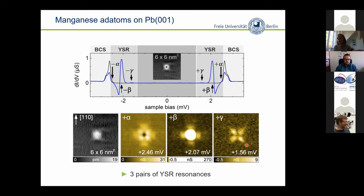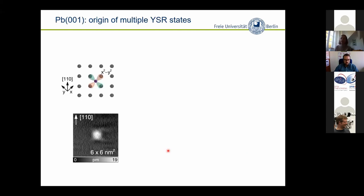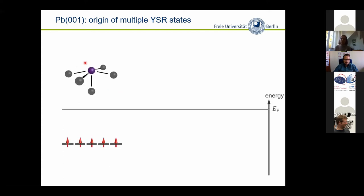When we measure the differential conductance at these particular energies and map it out spatially, certain shapes show up. While topography looks boring — just a protrusion from the atom — these shapes are rather intriguing and need to be explained. They do look like d orbitals, but the extent is more than one nanometer. You can't directly measure the d orbitals of an atom, but the symmetry has to be related to these orbitals. When a manganese atom is placed on the surface, it sits in a hollow site on the lead (001) surface with four-fold symmetry and feels a square pyramidal ligand field.